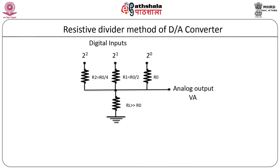As seen in the figure, the method which contains resistor values such that the value of each resistor is half of the previous value is known as the resistive divider method of DAC. There are three resistors R0, R1, and R2. The value of load resistor RL should be very much greater than R0. The value of each next resistor is exactly half of the previous one.